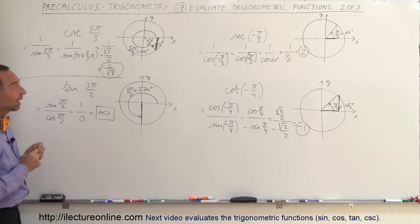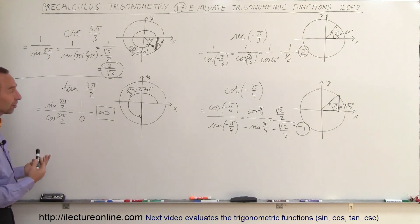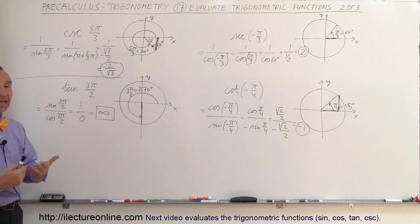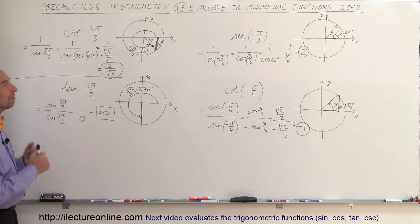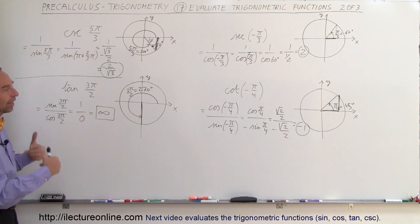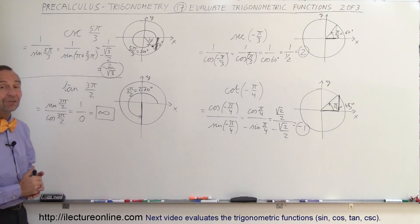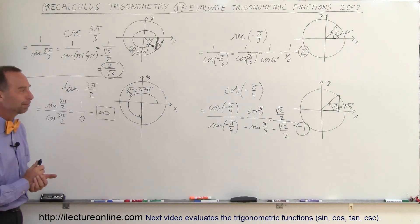So here are some nice examples of how to work with the tangent, the cotangent, the cosecant, and the secant. Usually you convert to the sine and cosine, then find the values of those functions, and then take the inverse or do the division to get the final answer. That's how we do that.